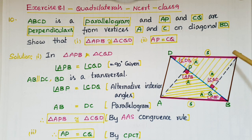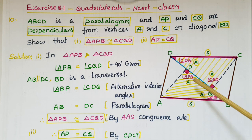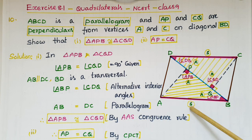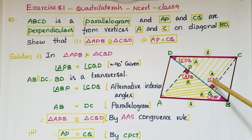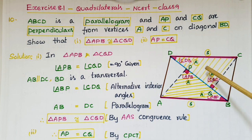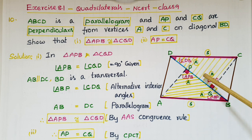Triangle APB is congruent to triangle CQD by the AAS congruence rule, because angle, angle, and side of this triangle are equal to the corresponding angle, angle, and side of this triangle. Once these two triangles are congruent, we can equate the corresponding parts of these two triangles.